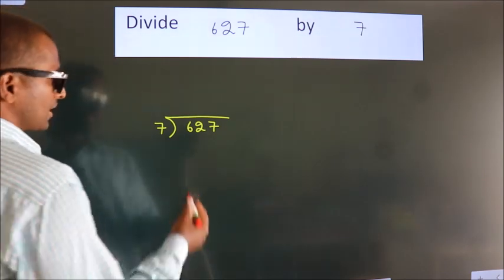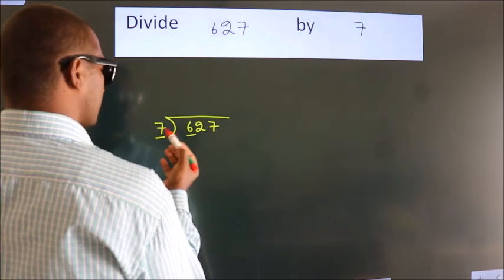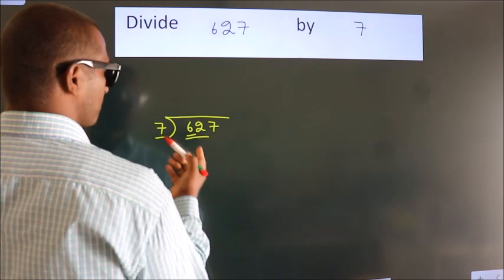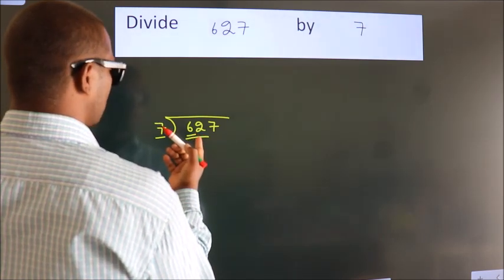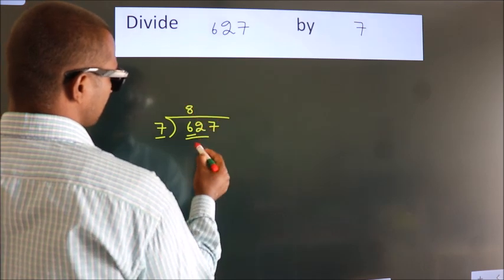Next, here we have 6, here 7. 6 is smaller than 7, so we should take 2 numbers: 62. A number close to 62 in the 7 table is 7 times 8, which is 56.